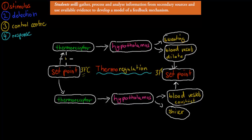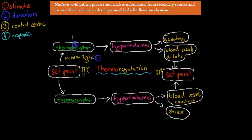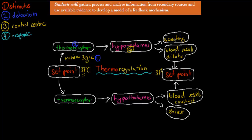Now if the body temperature increases — let's say to 39 degrees Celsius — that's our stimulus. Detection happens at our thermoreceptors, which pick up the change. That signal gets sent from the receptors to our hypothalamus, which is our control center. The hypothalamus controls the whole thing and will send a response, which is either sweating or blood vessels dilating, or both. These often occur together and help bring the temperature back down from 39 degrees to 37 degrees Celsius.